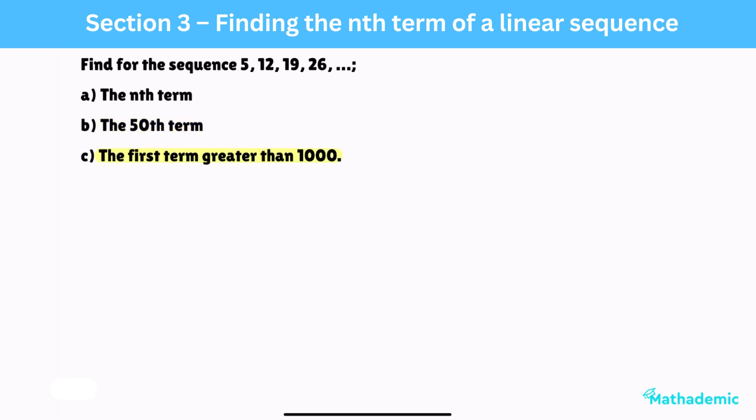For part c, we will require a new method that we haven't covered yet. We'll take our nth term formula, 7n minus 2, and put in greater than 1000. This is since we need to find the first n value which is greater than 1000. Assuming that you're not multiplying or dividing by a negative number, you can treat the greater than sign as you would an equal sign. So, we can rearrange to get 7n is greater than 1000 plus 2, and then divide by 7 to get n is greater than 1002 over 7. Popping this in a calculator gives us 143.142, and so on.